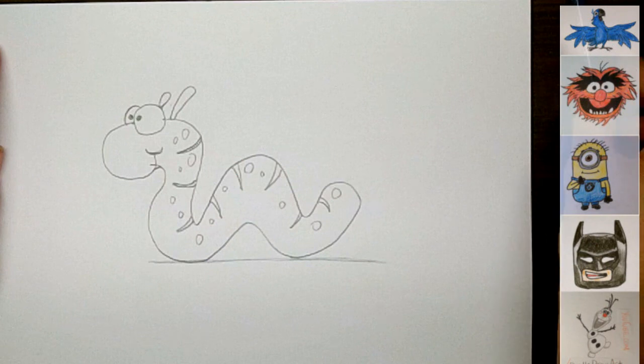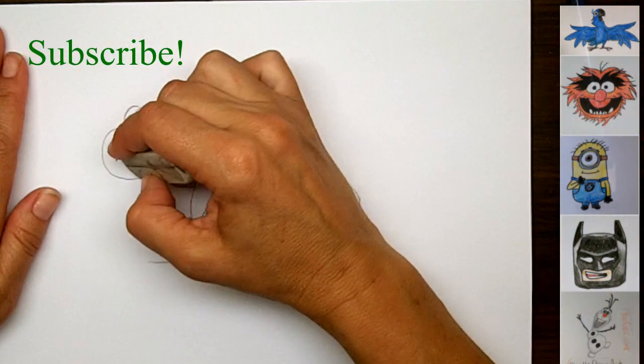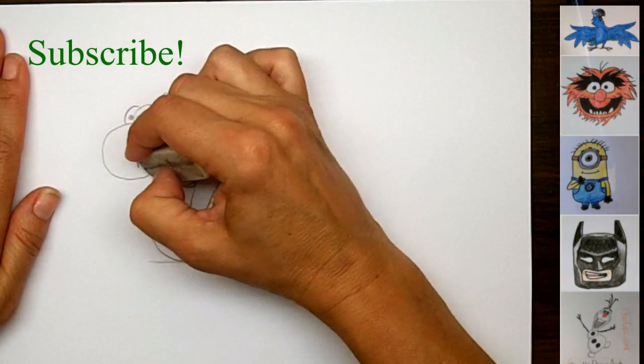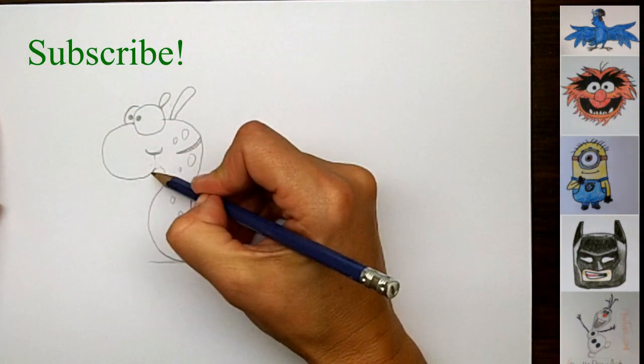All right, so that is how I draw an inchworm. And now what I'm going to do is I'm going to trace my lines with a marker, and then I'll color him in.